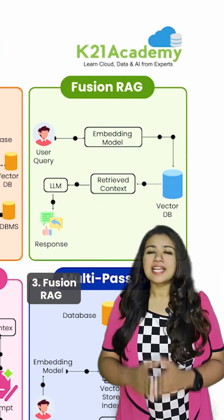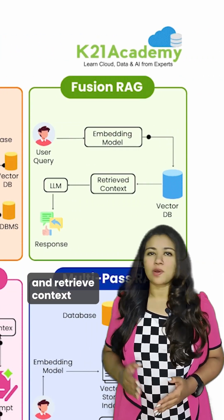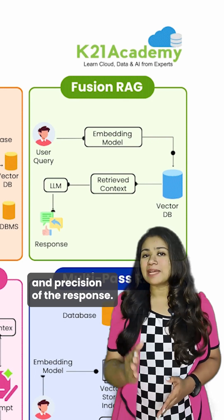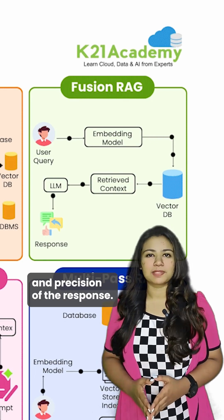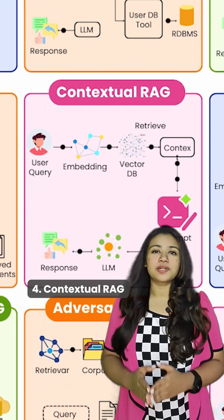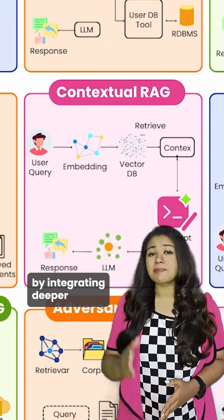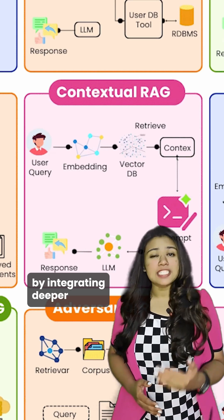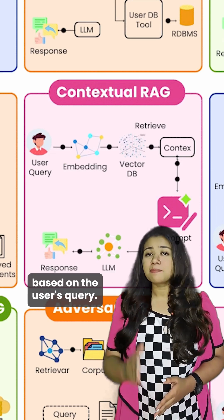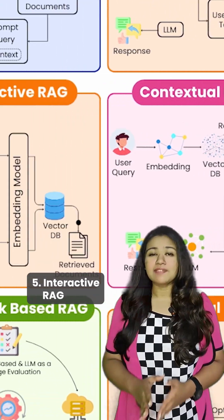3. Fusion RAG: combines embeddings and retrieved contexts to improve the relevance and precision of the response. 4. Contextual RAG: enhances the answers by integrating deeper contextual data from a vector database based on the user's query.